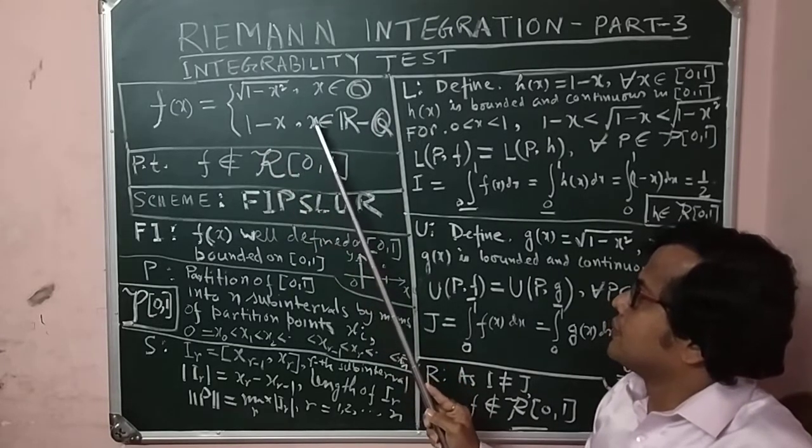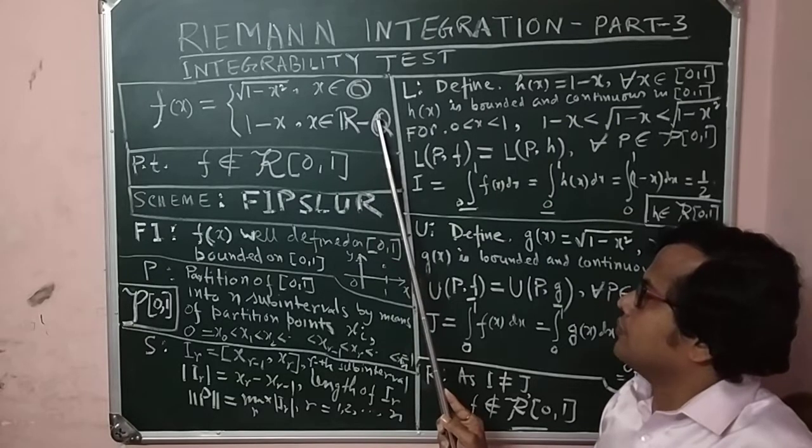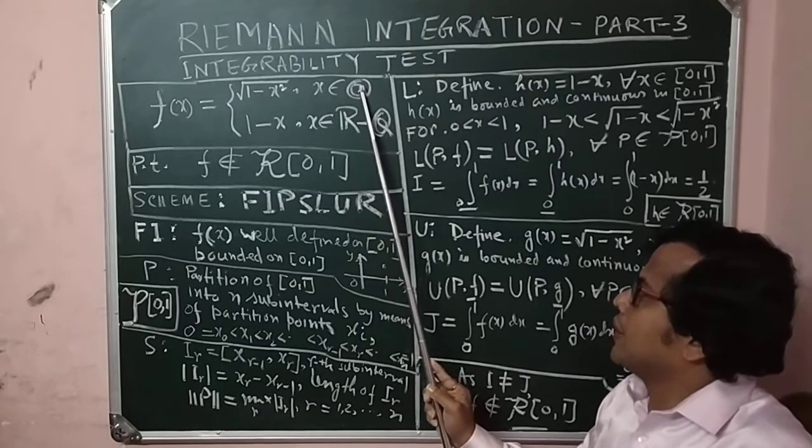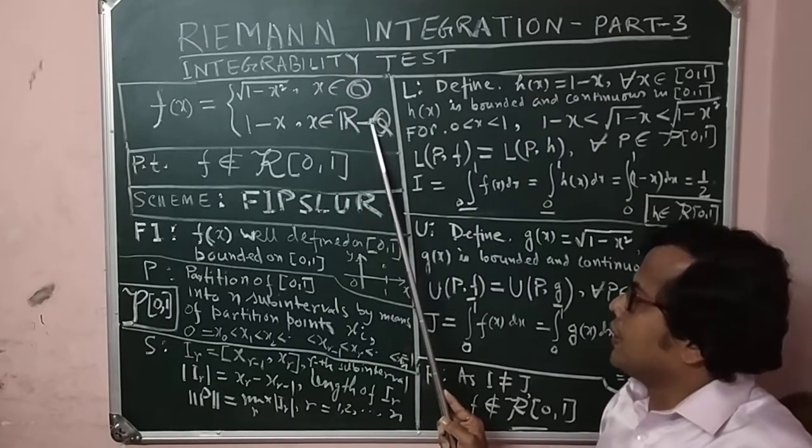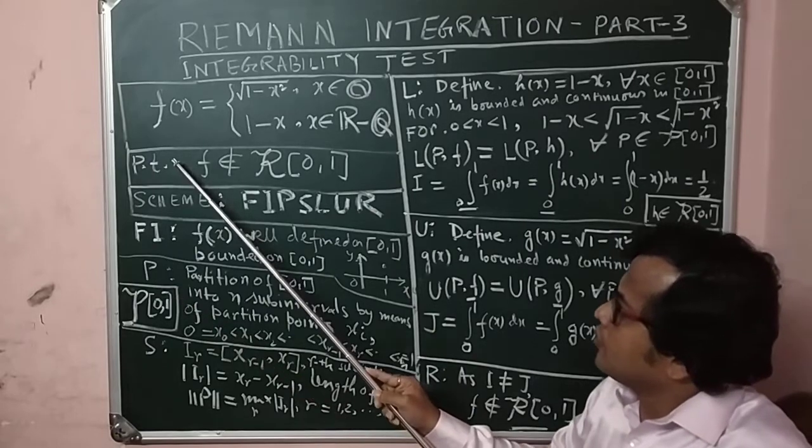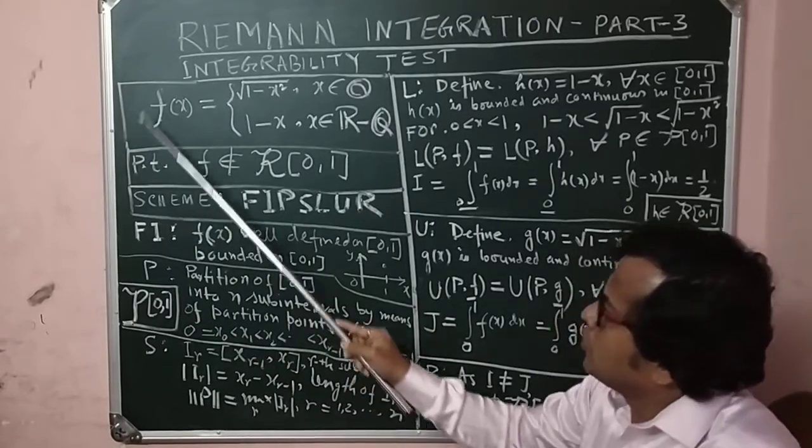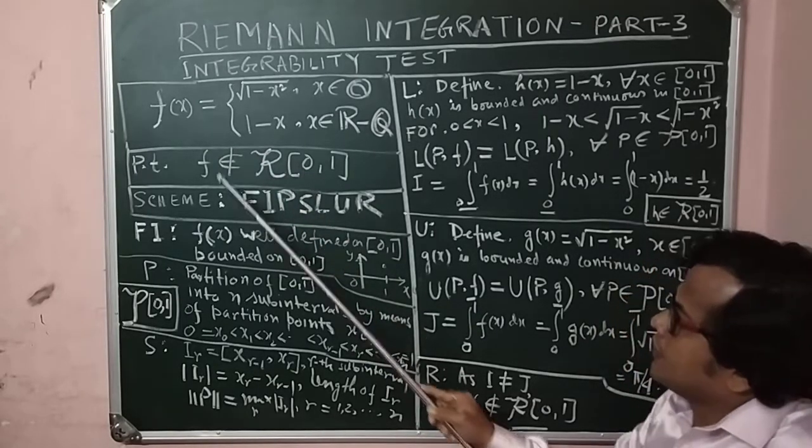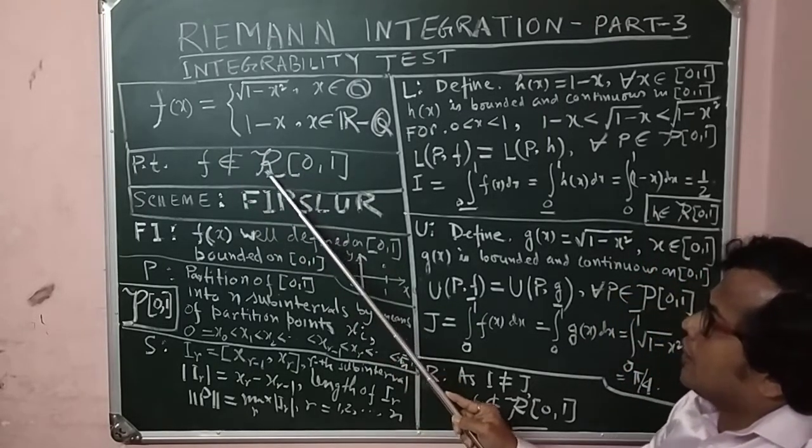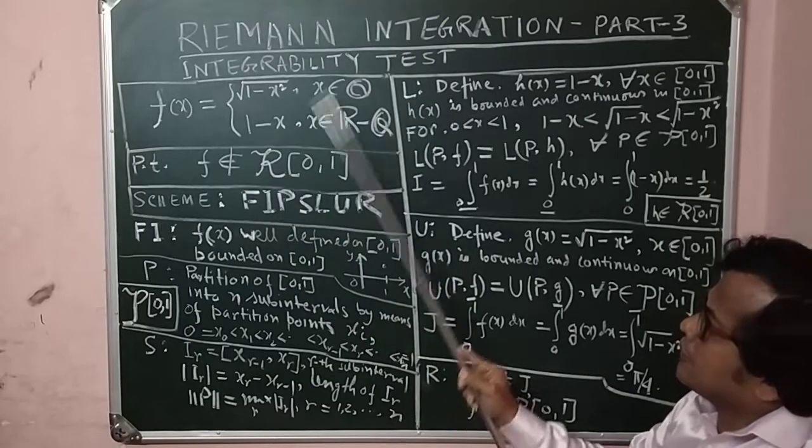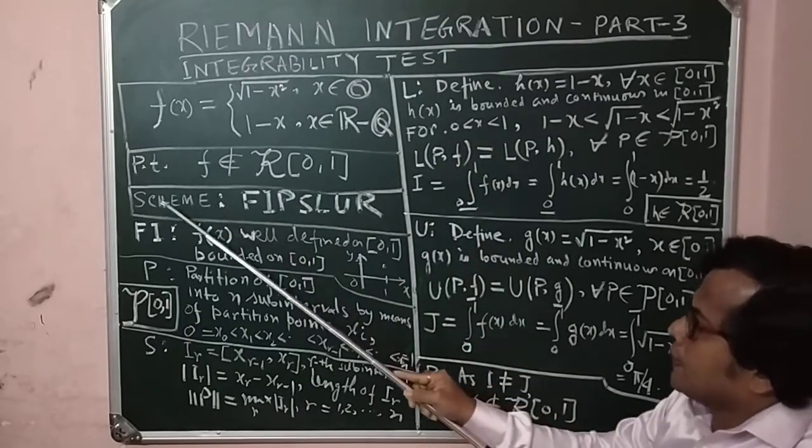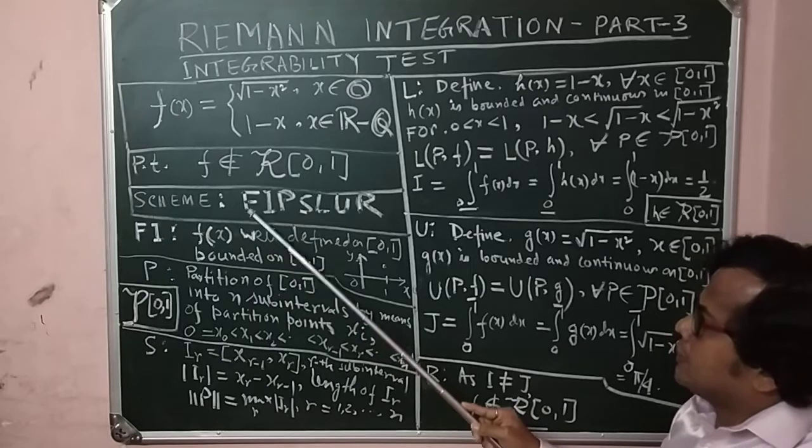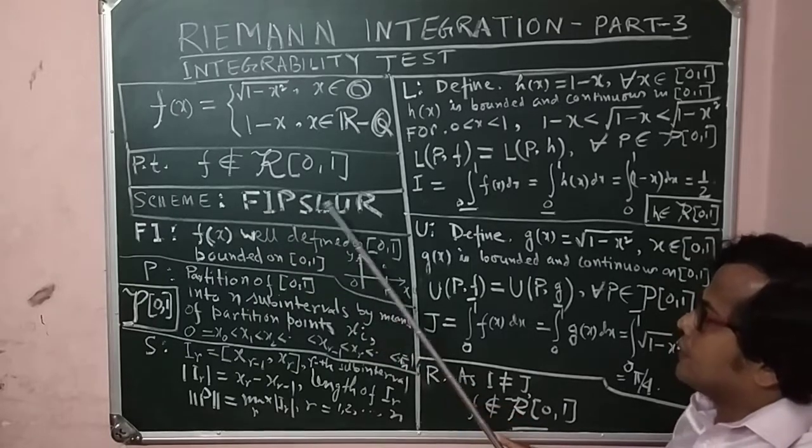This is for x rational and irrational numbers. To show that integration from 0 to 1 of f(x) does not exist in the Riemann sense, that f does not belong to R[0,1]. As we discussed in Riemann integration part 1, our scheme to establish the problem is FIPSLUR.